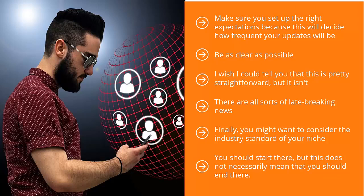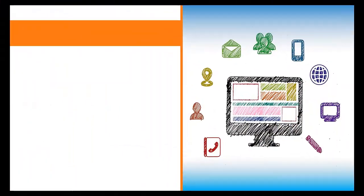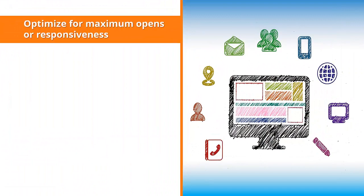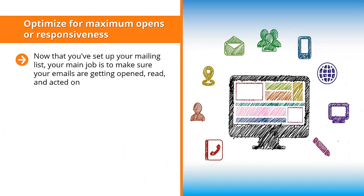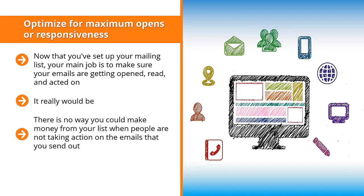Pay attention to the following tips to maximize the results you get from your email lists. Optimize for maximum opens and responsiveness. Now that you've set up your mailing list, your main job is to make sure your emails are getting opened, read, and acted on. This is the essence of list marketing. If you fail to optimize your emails, your list is dead in the water — what's the point of getting a lot of people to join your mailing list when they're not going to be reading your emails?